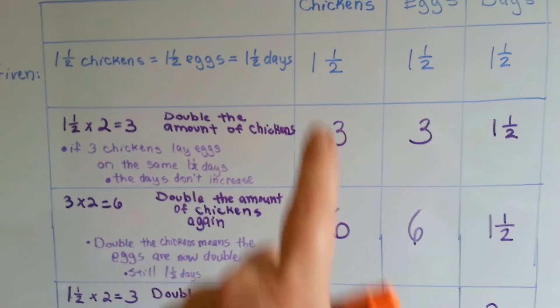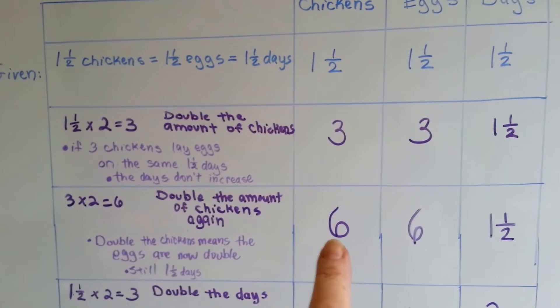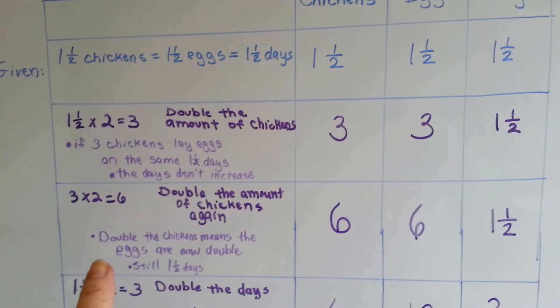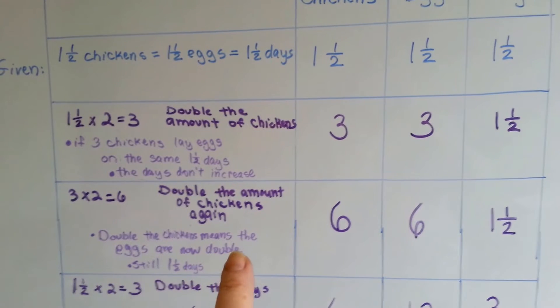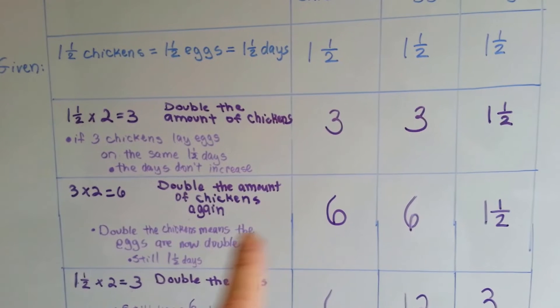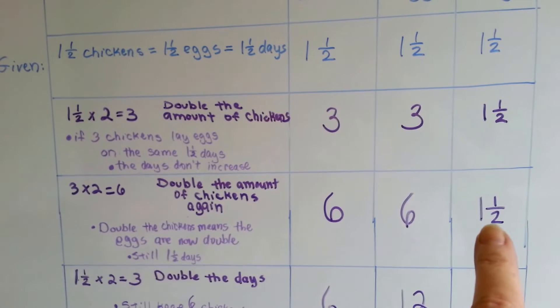So by doubling the chickens again, we are now at our six chickens. We doubled the chickens means the eggs are now double again. So they're at six. But we're still at one and a half days.